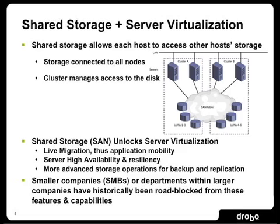A lot of smaller organizations have traditionally been a little bit roadblocked from doing a lot of this. Either they thought clustering was too complicated or things like shared storage were too costly. Because some technologies like Fiber Channel can be very expensive, but iSCSI SAN is a technology that can fit the needs of a smaller organization from a cost perspective. It's less complex, and in the case of Drobo, we do offer some really easy-to-use storage that fits really well into this sort of architecture.